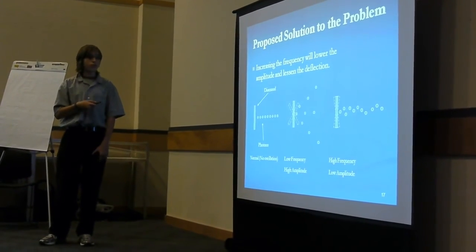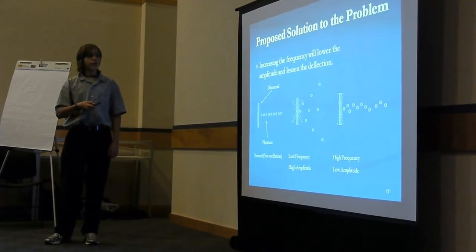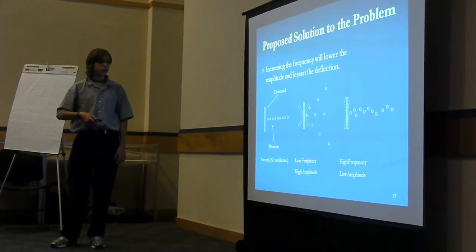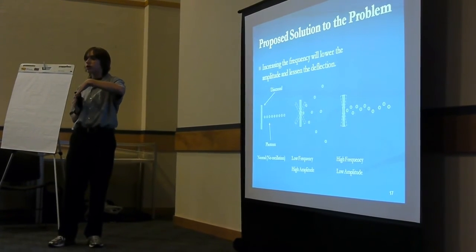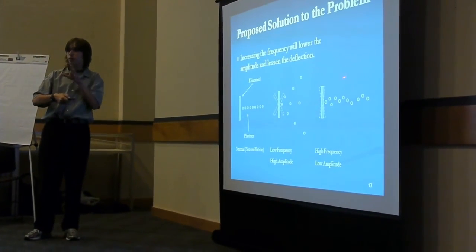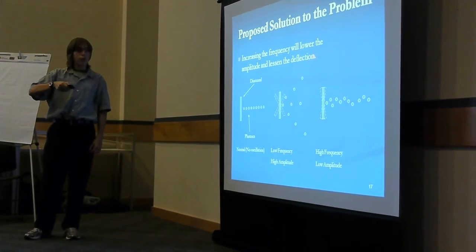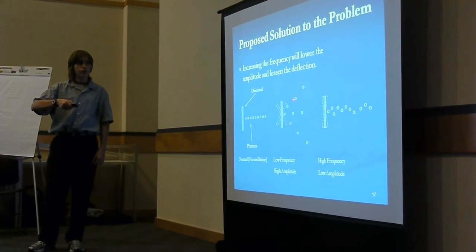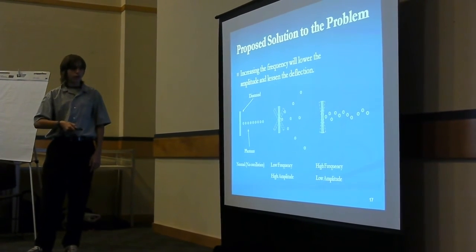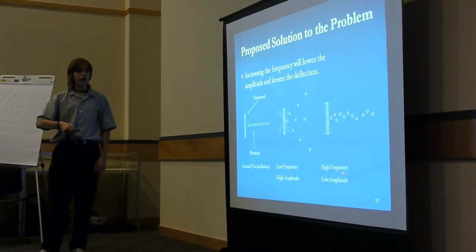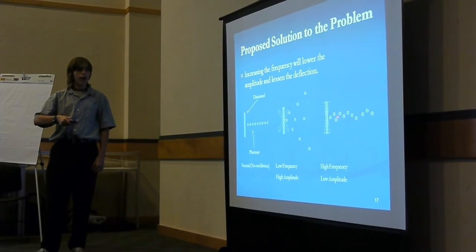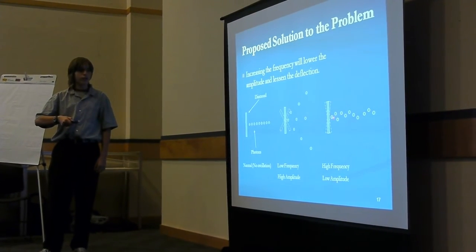But the solution to this problem might be that we have a diamond, and it's oscillating. And because it has a low frequency, it has a high amplitude. It's going to a very big degree. There's a lot of motion here. So it's being deflected way off. There's a large angle between this one and this one that's flying away. But the solution might be adding more frequency to it, giving it a higher frequency, thus making it move at a much smaller amplitude, and getting a more precise beam like this.